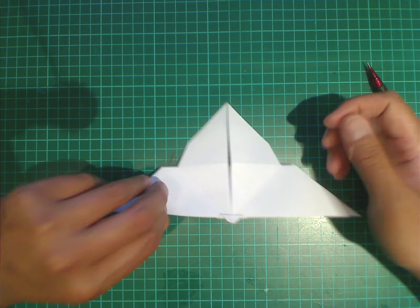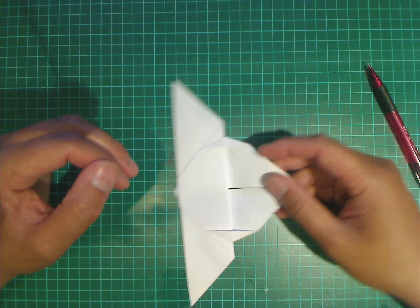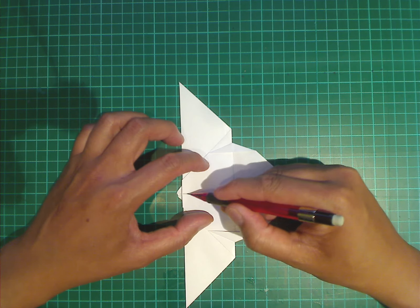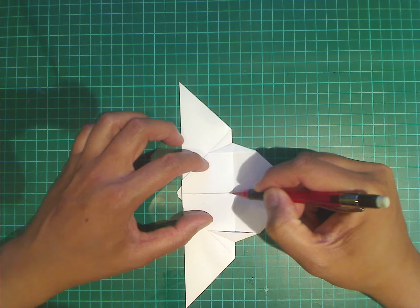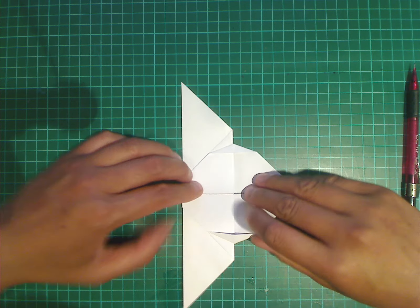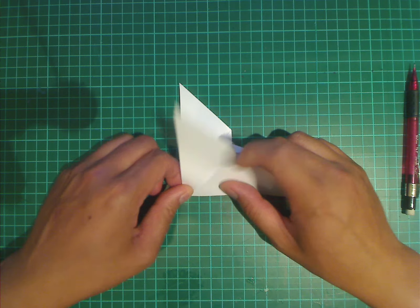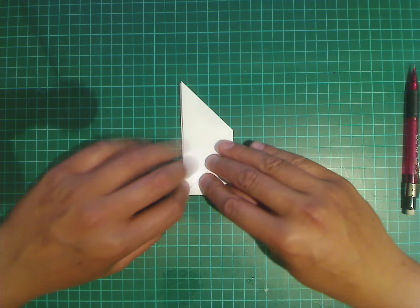And then turn the model over again. We're now going to fold the entire model in half along this horizontal. And it's quite thick here. So you have to bend all the paper over.